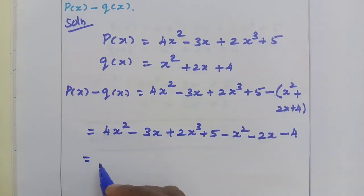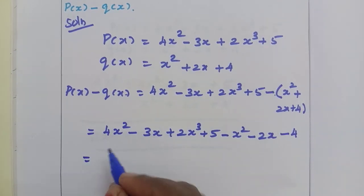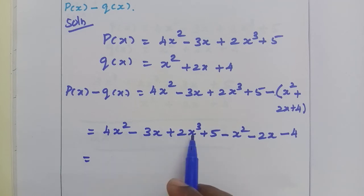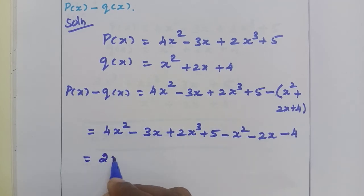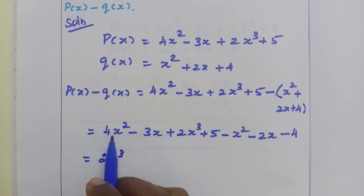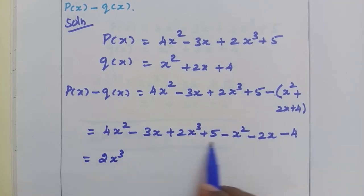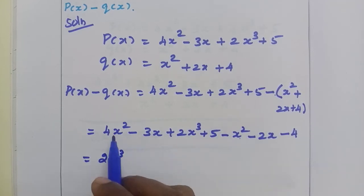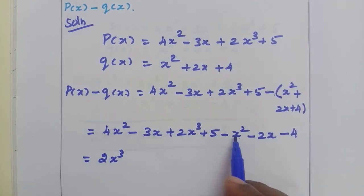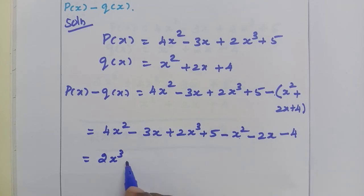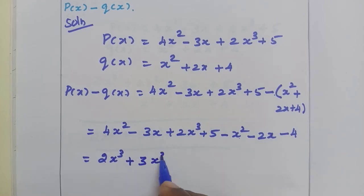Now, add or subtract the like terms. Here, 2x cubed — there is only one term, so write 2x cubed. Then the x squared terms: there are two terms, 4x squared and minus x squared. Different sign integers subtract, so 3x squared.